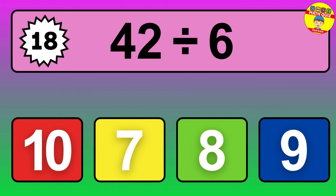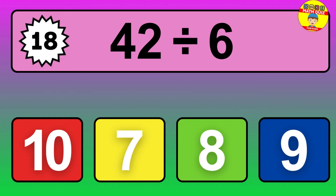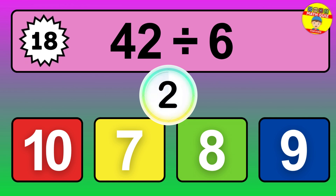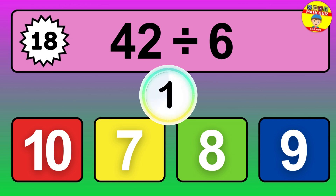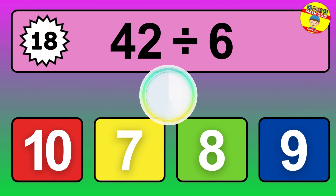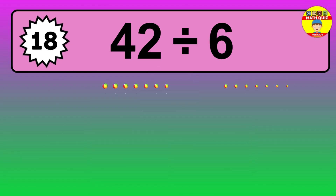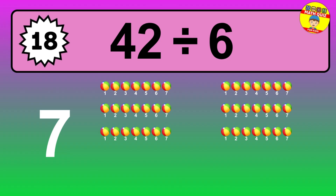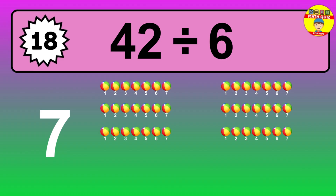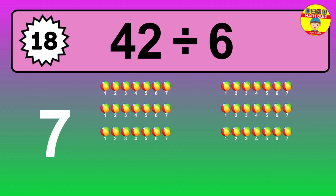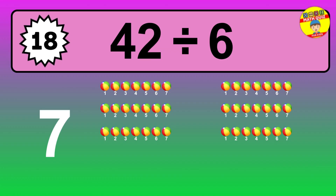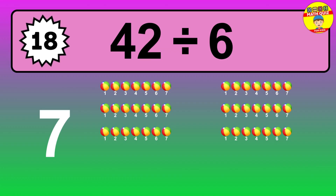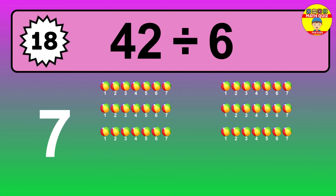42 divided by 6 — time to think. Let's go to the solution. Divide the number 42 by 6. Each group contains 6 units, so dividing 42 by 6 results in 7 equal groups. Thus, the result is 42 divided by 6 equals 7.